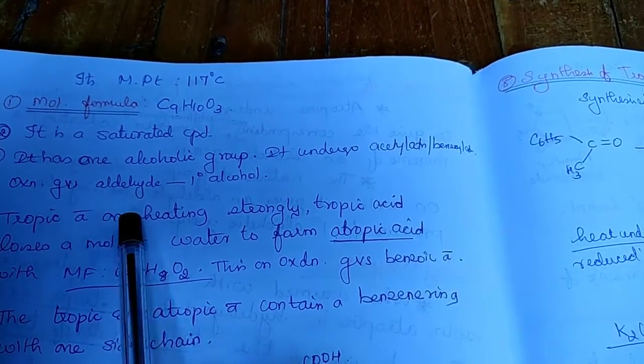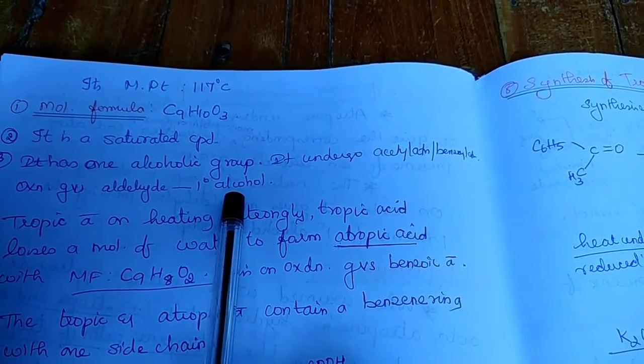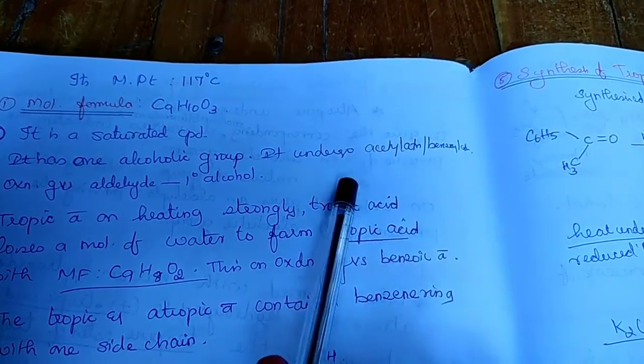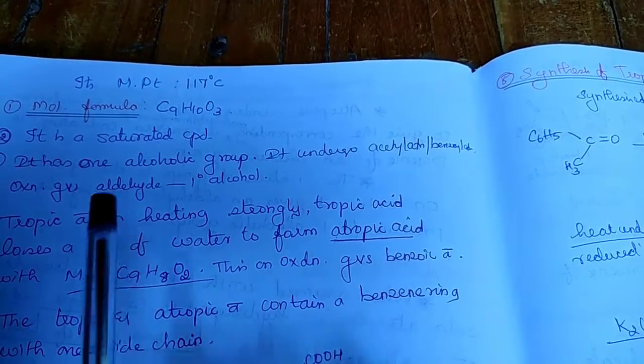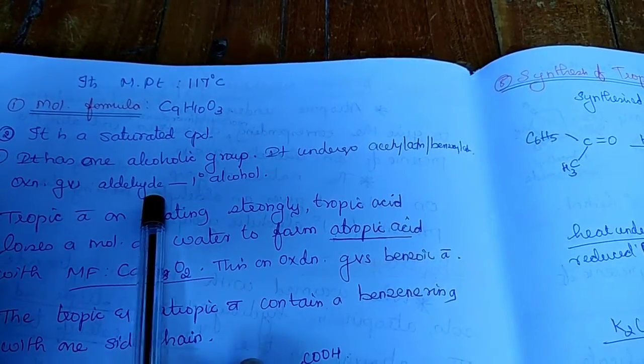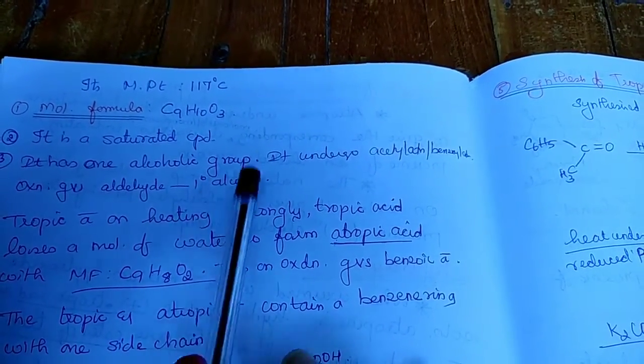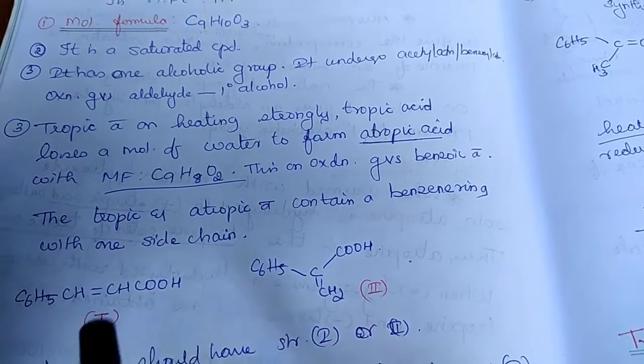It has an alcoholic group which can be confirmed by acetylation or benzoylation. We get a monoacetyl or monobenzoyl derivative and on oxidation we get an aldehyde. So it is a primary alcohol.